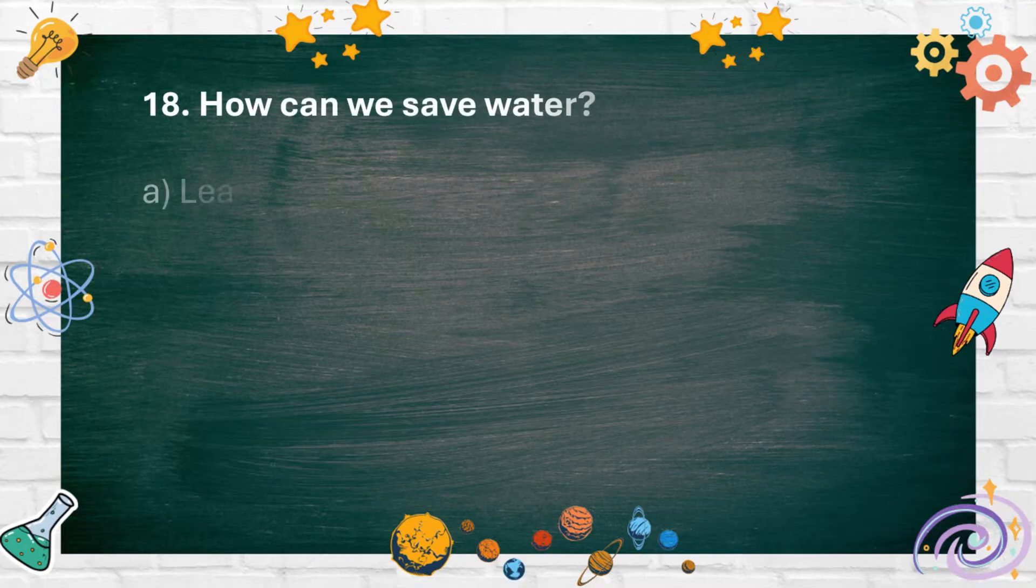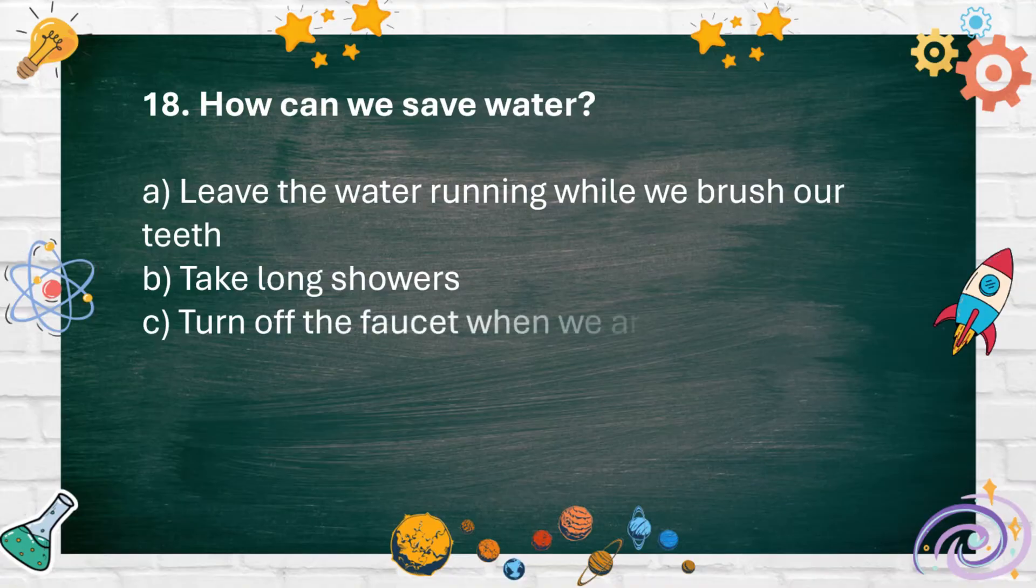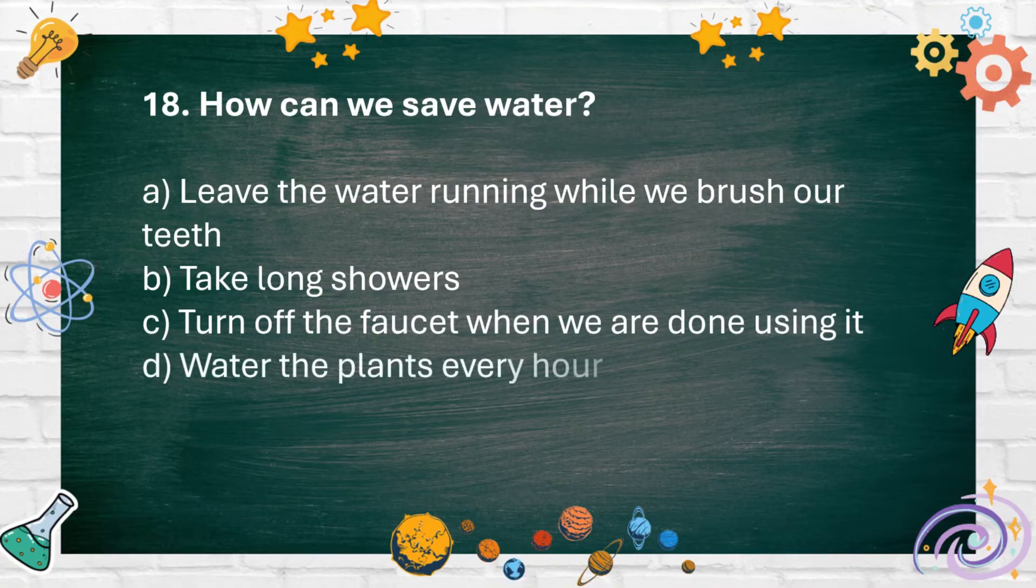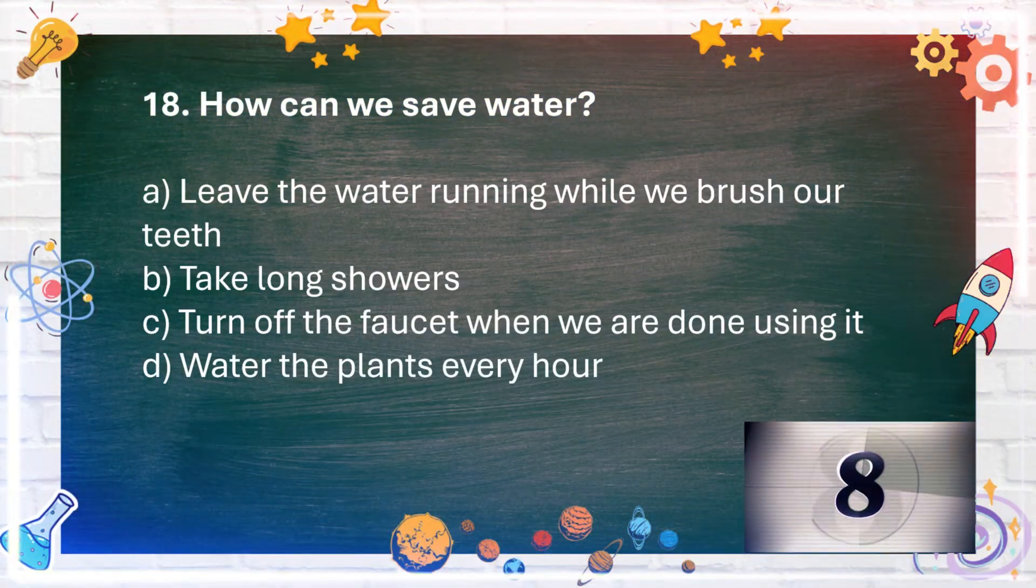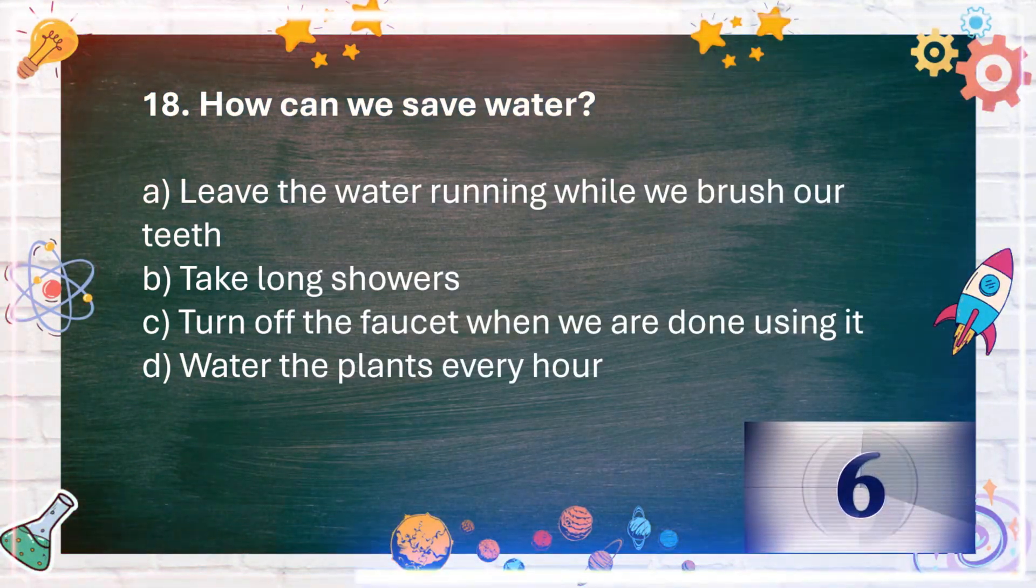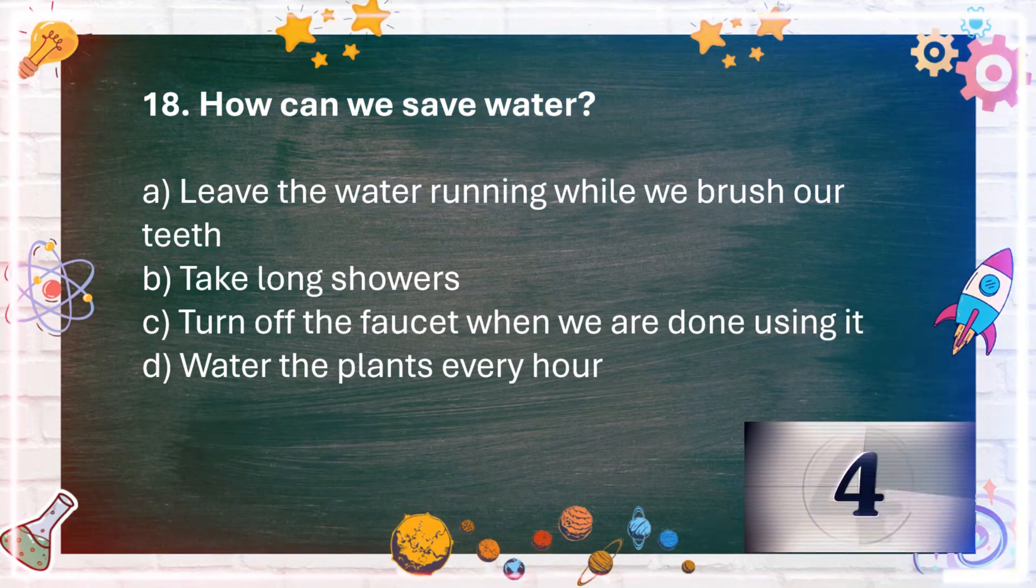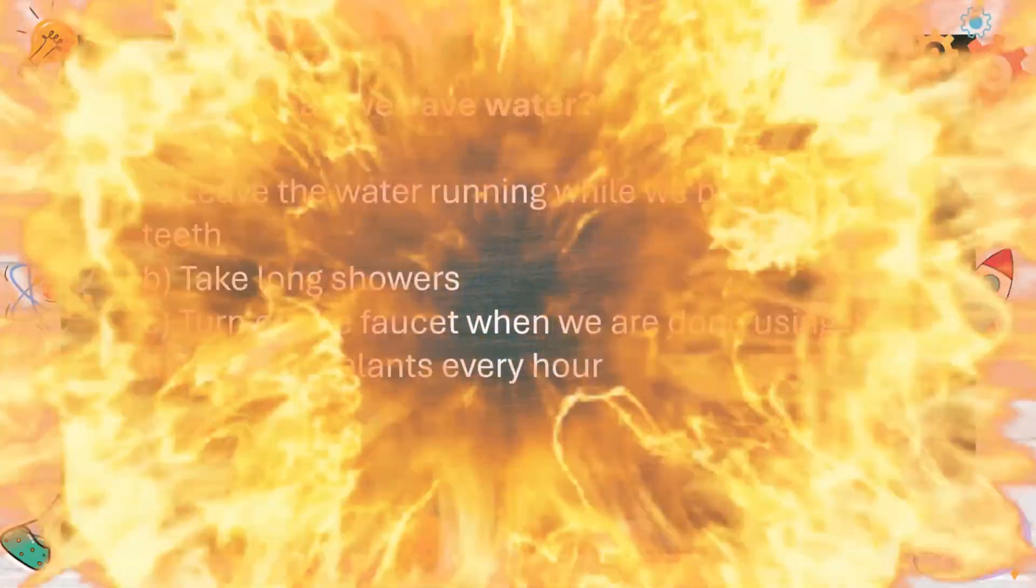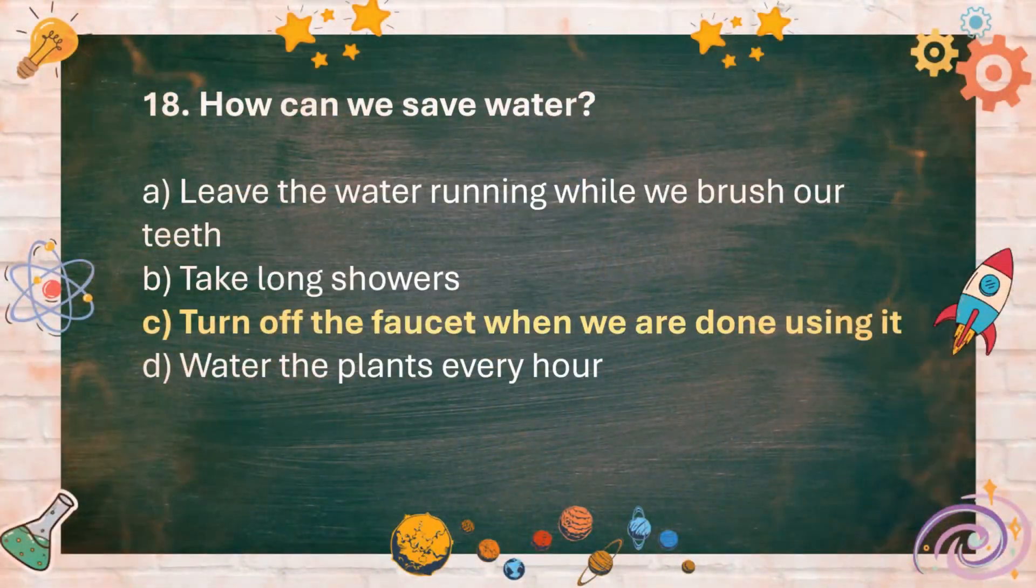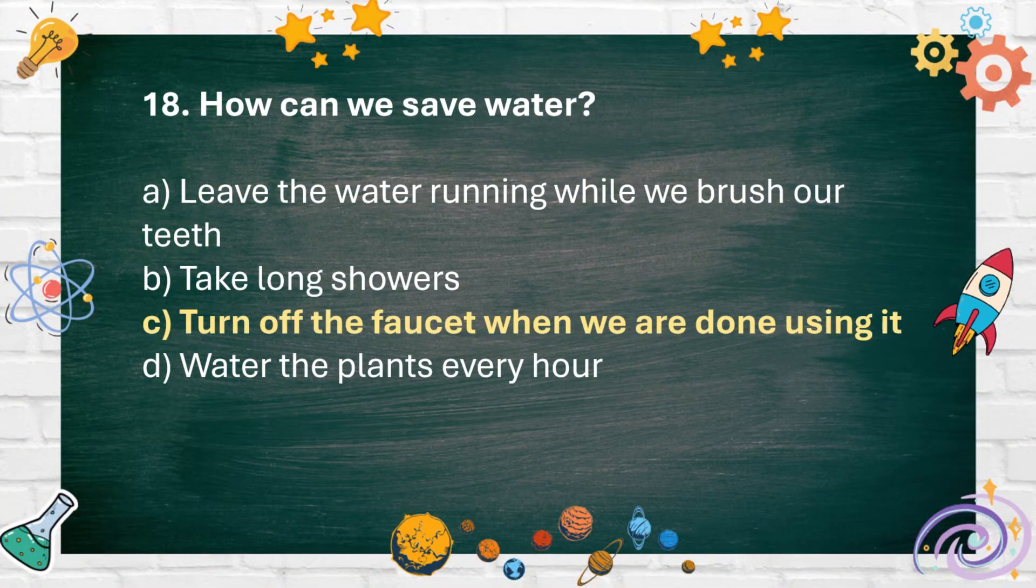Number 18. How can we save water? A. Leave the water running while we brush our teeth B. Take long showers C. Turn off the faucet when we are done using it D. Water the plants every hour. The answer is C. Turn off the faucet when we are done using it.